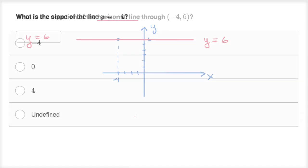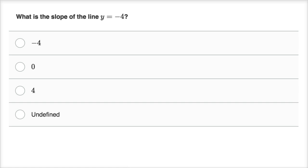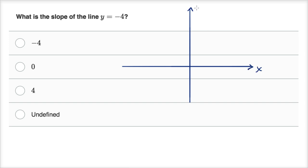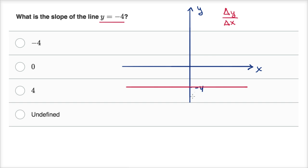So the equation is y equals six. Let's do another one. Here we are asked: what is the slope of the line y equals negative four? Let's visualize it. Draw our axes again — x-axis, y-axis. For whatever x you have, y is going to be negative four. So the line looks like this. Slope is change in y over change in x. No matter what I change x, y doesn't change — it stays at negative four. My change in y is always going to be zero. It's constant. So the slope here is going to be equal to zero.